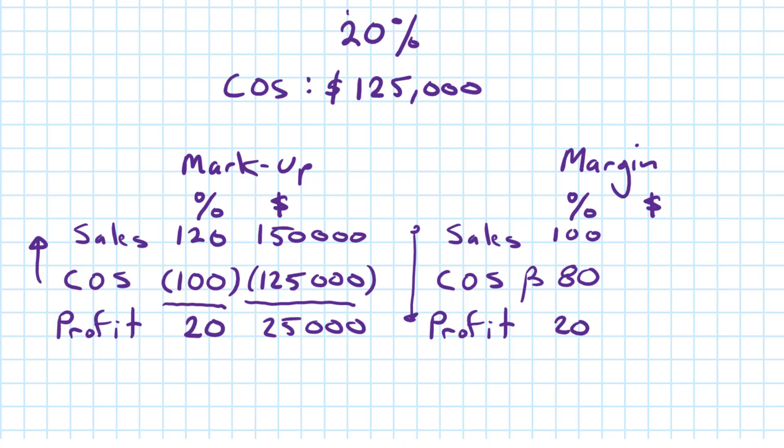The next step is to plug the cost of sales into its place in the P&L. And we'll use the same approach. We'll multiply the $125,000 by 100, then divide by 80. And that's how we'll get the selling price. And if we do the math, we get $156,250.